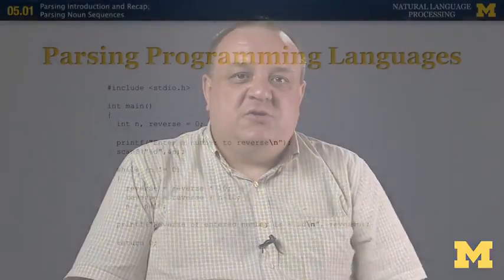I want to remind you that last time we looked at parsing already. Parsing human languages is very different from parsing programming languages. When we parse a programming language, we have to parse statements, punctuation, and variables. However, all of those are designed to be unambiguous. This C program here can only be interpreted in one possible way — there's a main function, variable declarations, and a while loop — each converted into binary code in a very unambiguous way.